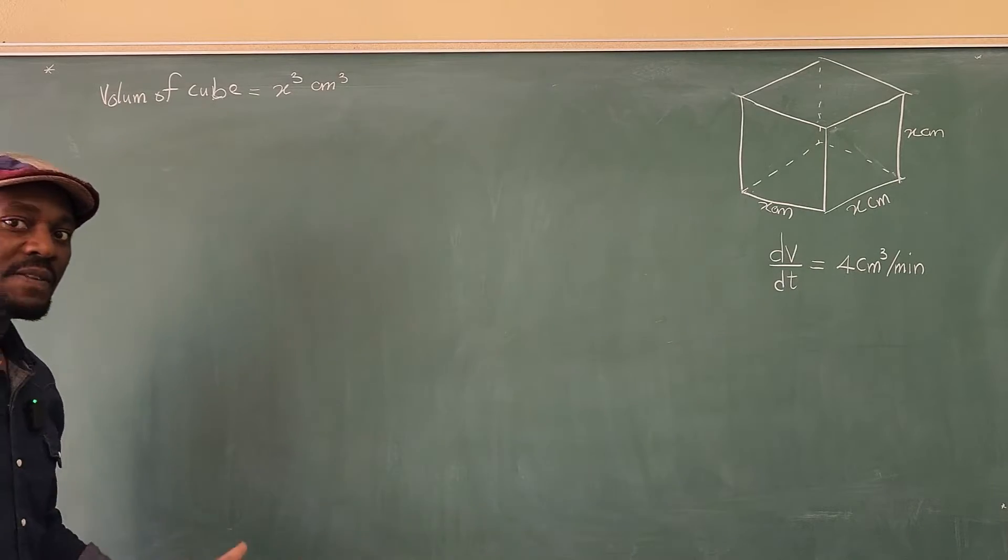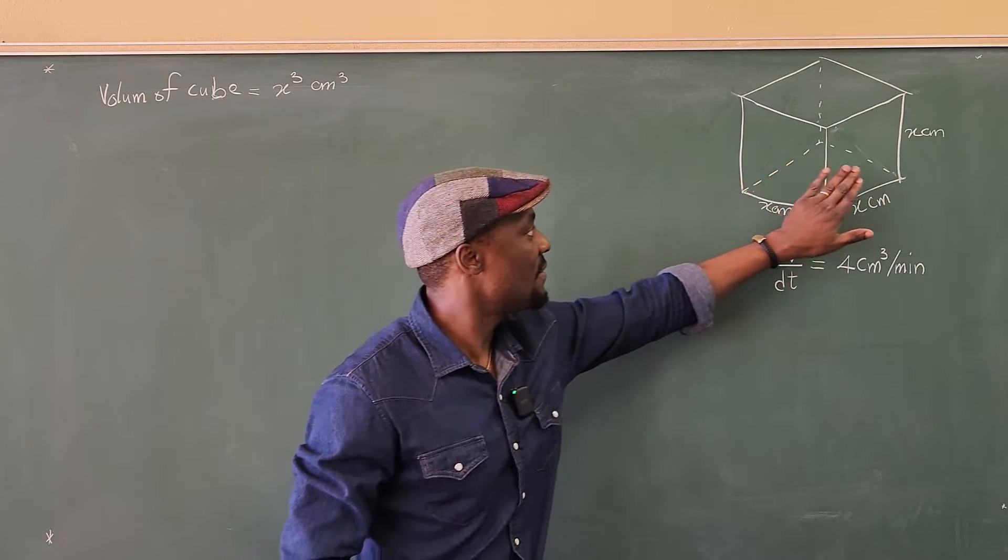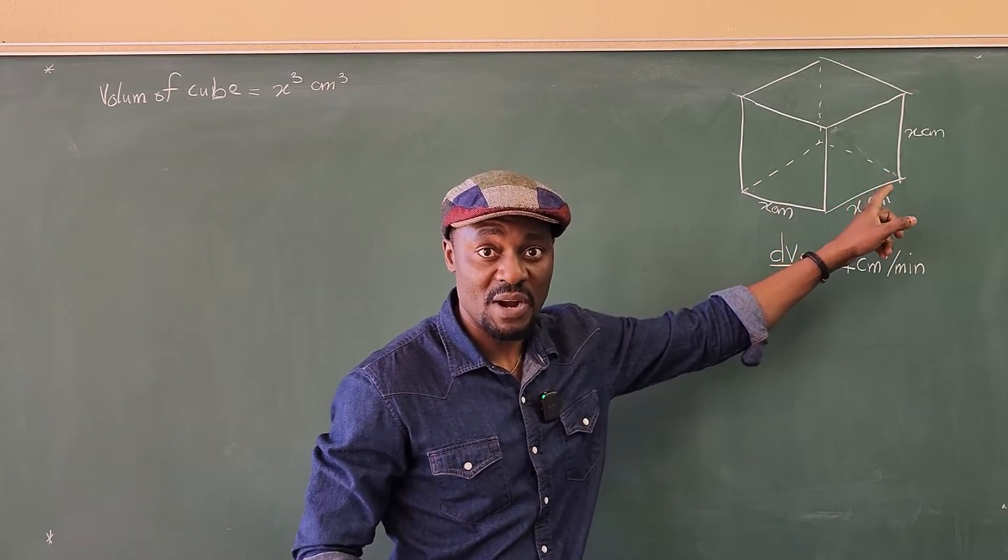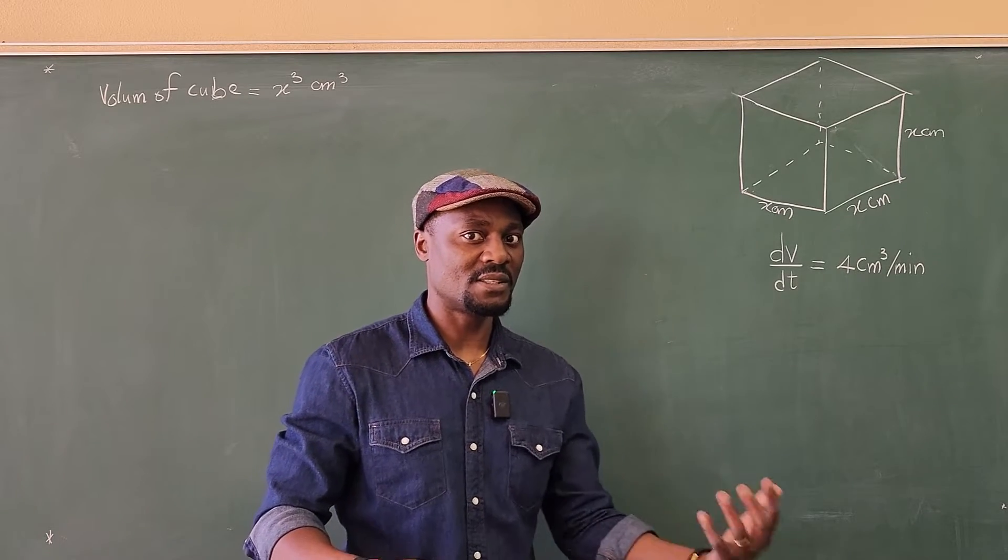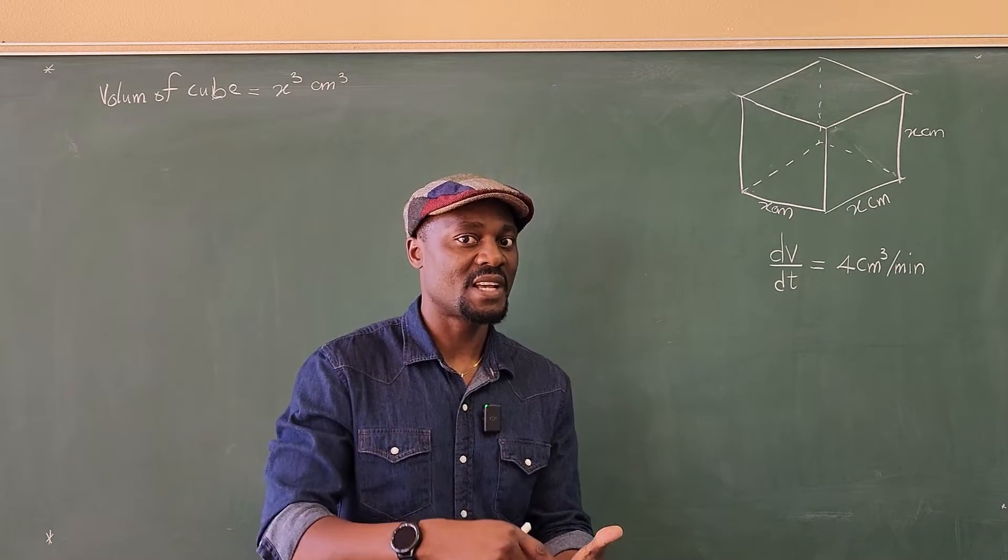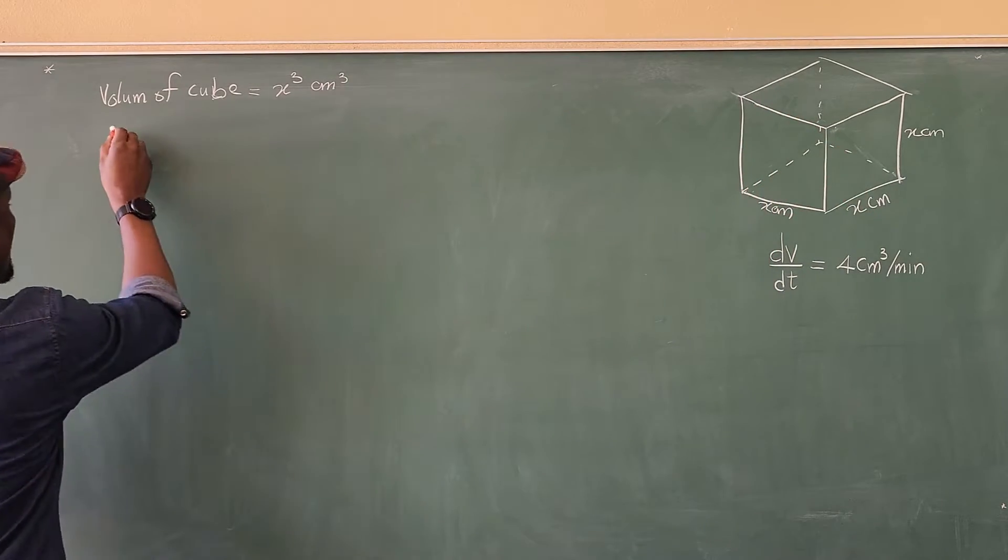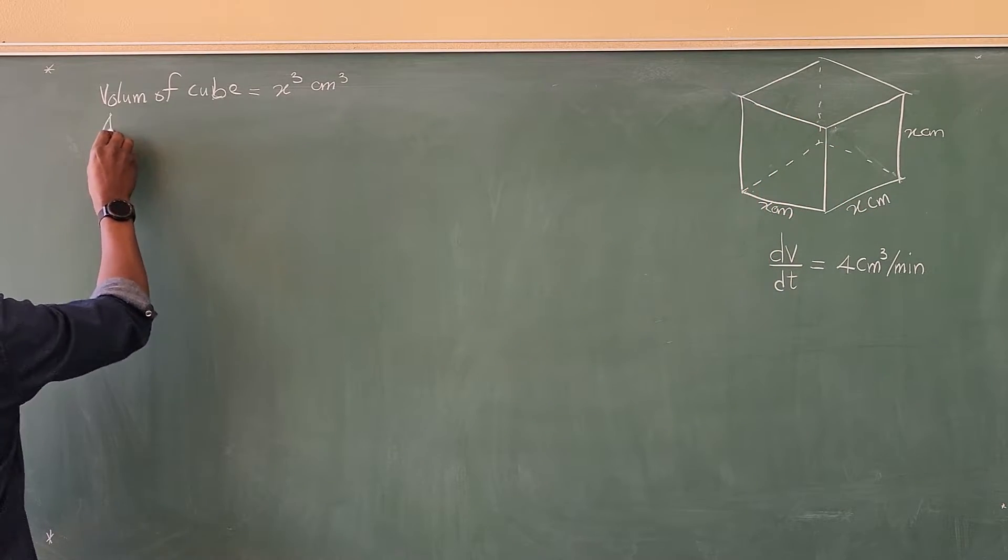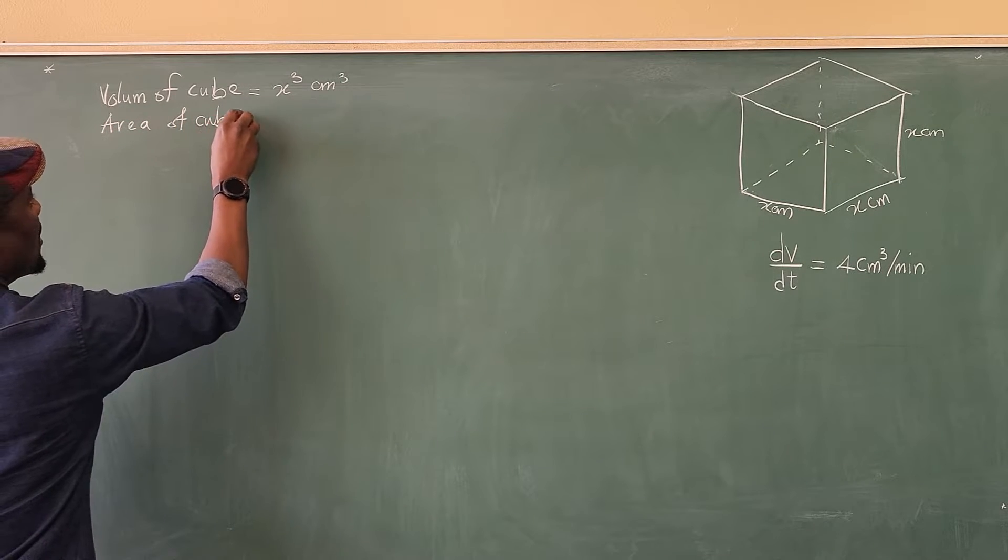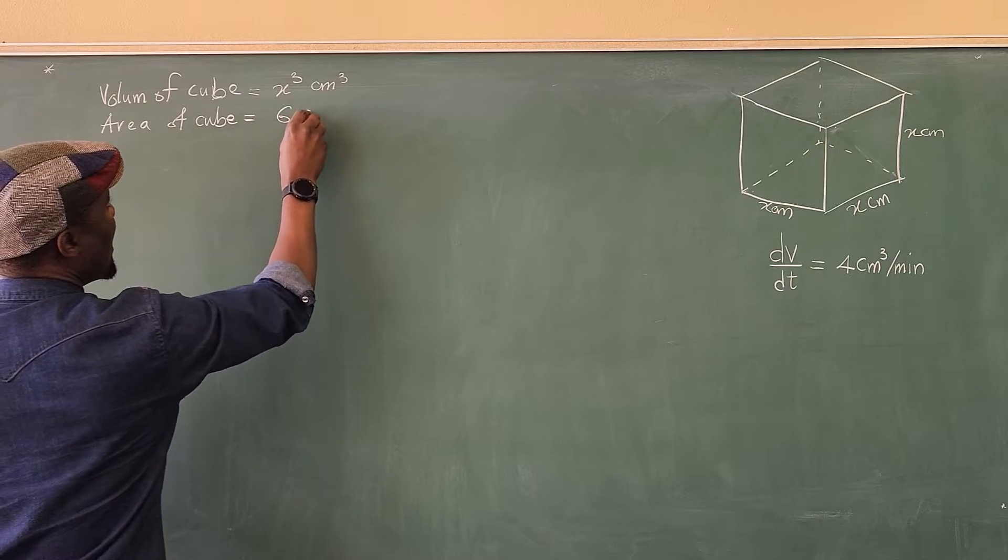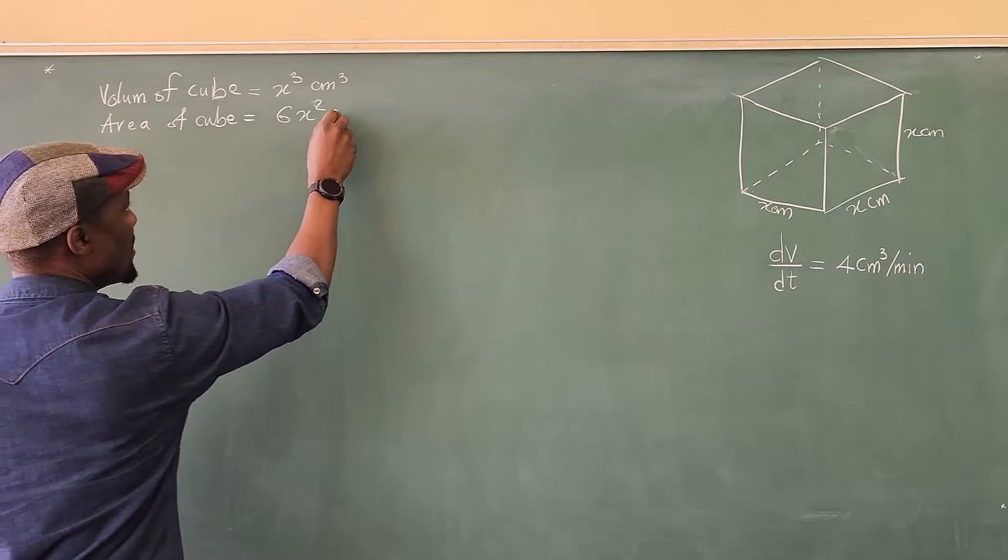What is the surface area of a cube? Well it is the sum of all the six faces and the area of each side is just length times breadth. So you're going to get x squared on each occasion, but there are six of them, so it's going to be 6x squared. So we're going to say that the area of cube will be equal to 6x squared centimeters squared.